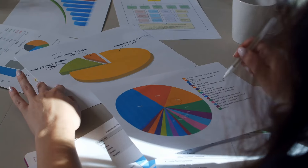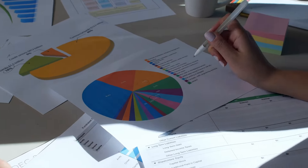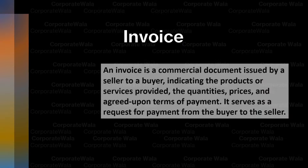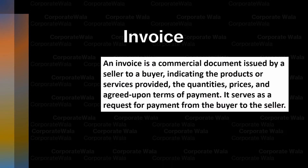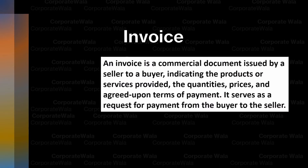Upon receiving the goods, the company verifies the quantity and quality against the purchase order and issues a Goods Receipt Note. The next step is that since the company has received the goods or services, the vendor will send an invoice for payment.